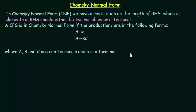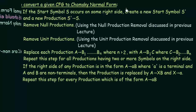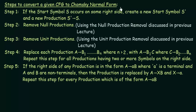Now we will see the steps that we need to follow in order to convert a given CFG to its equivalent Chomsky Normal Form. We have steps 1 to 5, and following these 5 steps we can convert a given context free grammar to Chomsky Normal Form.